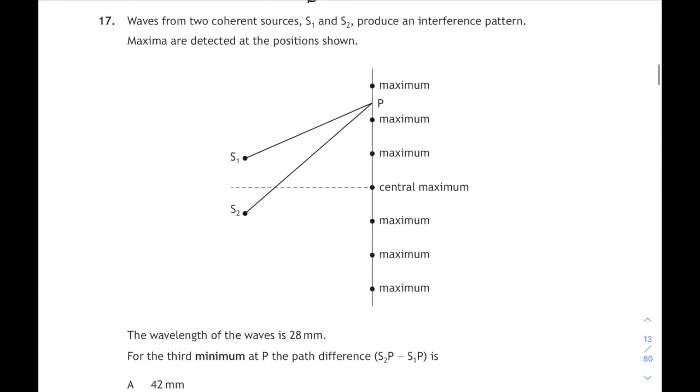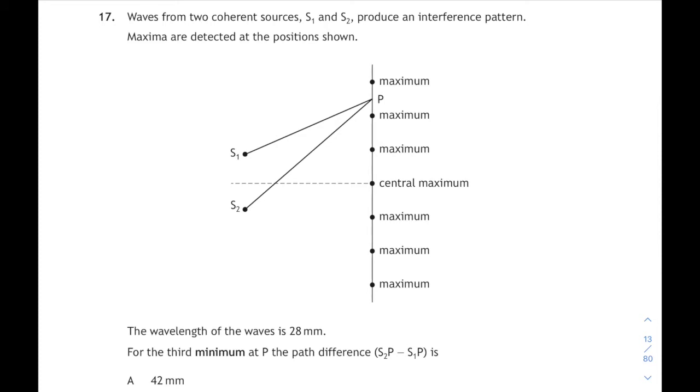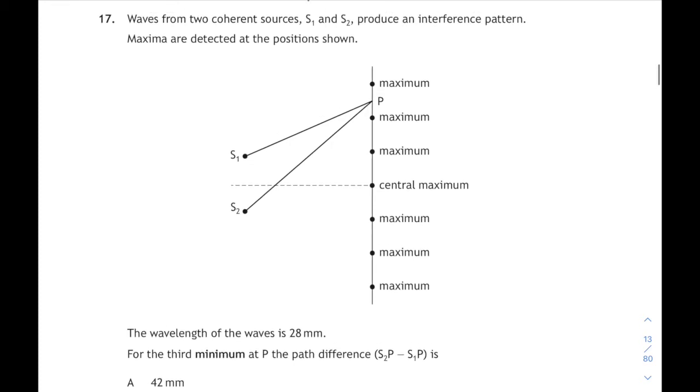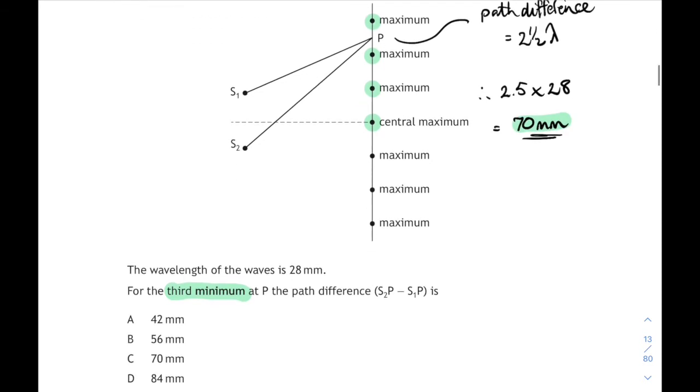So 16 was photoelectric effect. We're going to start at 17 which is interference of waves. We have two waves travelling from S1 and S2. They interfere and maxima are produced at the positions shown. But we are shown a point P that is between two maximums, so that will be a minimum, the third minimum. We have to work out what the path difference is. If it's halfway between the second and the third maximum, the path difference will be two and a half wavelengths. Two wavelengths to the second maximum, three wavelengths to the third maximum. So two and a half wavelengths. We're also told what the wavelength is, 28 millimetres. So if we want what that actual path difference will be, it will be two and a half times the wavelength, which is 70 millimetres. And 70 millimetres corresponds to answer C.